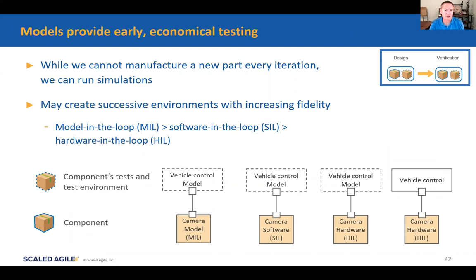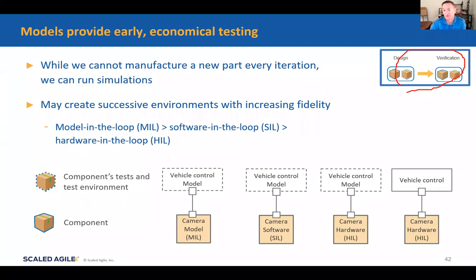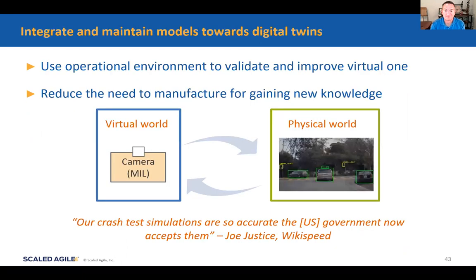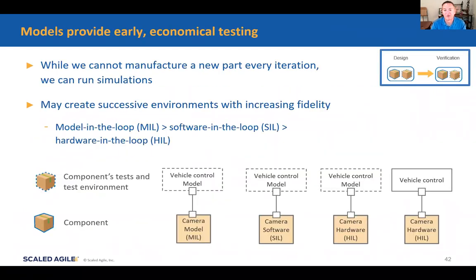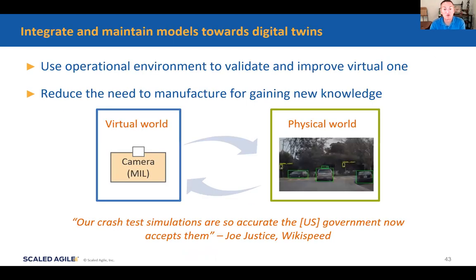We can start testing early inside models — models provide good economical testing. In the design-verification cycle, we're doing a lot of modeling, so we should build fast feedback loops and built-in quality inside those models. We talked about TDD for electrical design and TDD for mechanical design. If we can integrate in that virtual world and maintain these models over time, they become the digital twin for the physical world — we can do a lot of experimentation and learning back in the model world. Joe Justice of Wikispeed claims that crash simulations in models are now so accurate that the U.S. government accepts them, allowing regression crash tests in a model instead of crashing a vehicle while still complying with regulations.